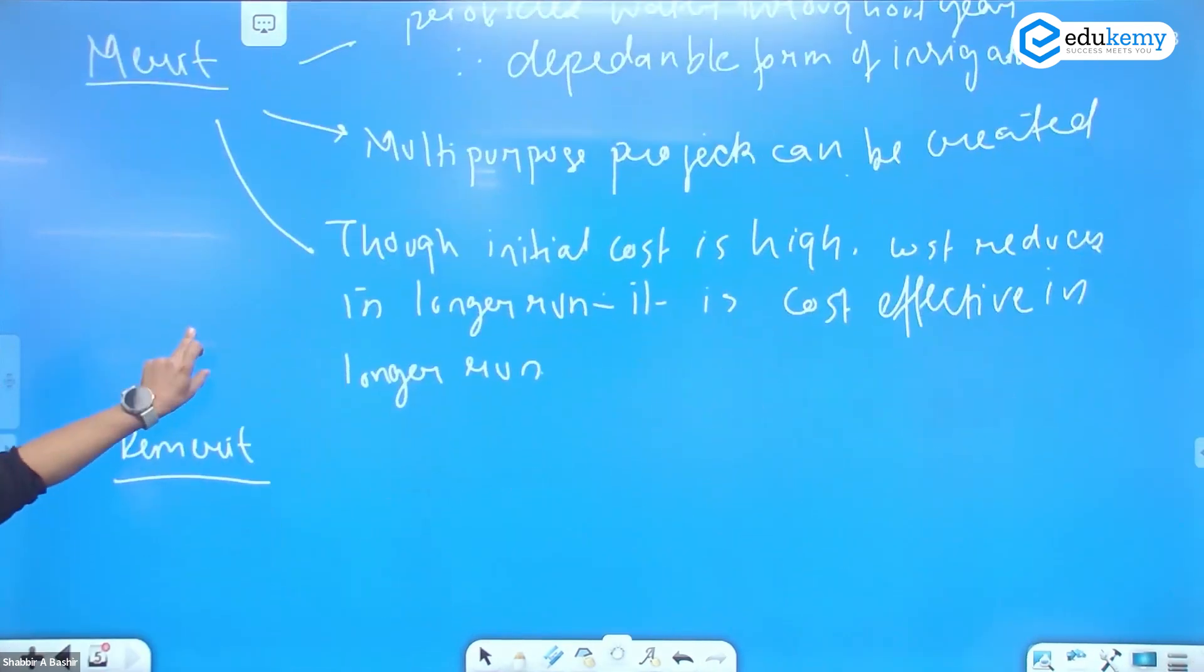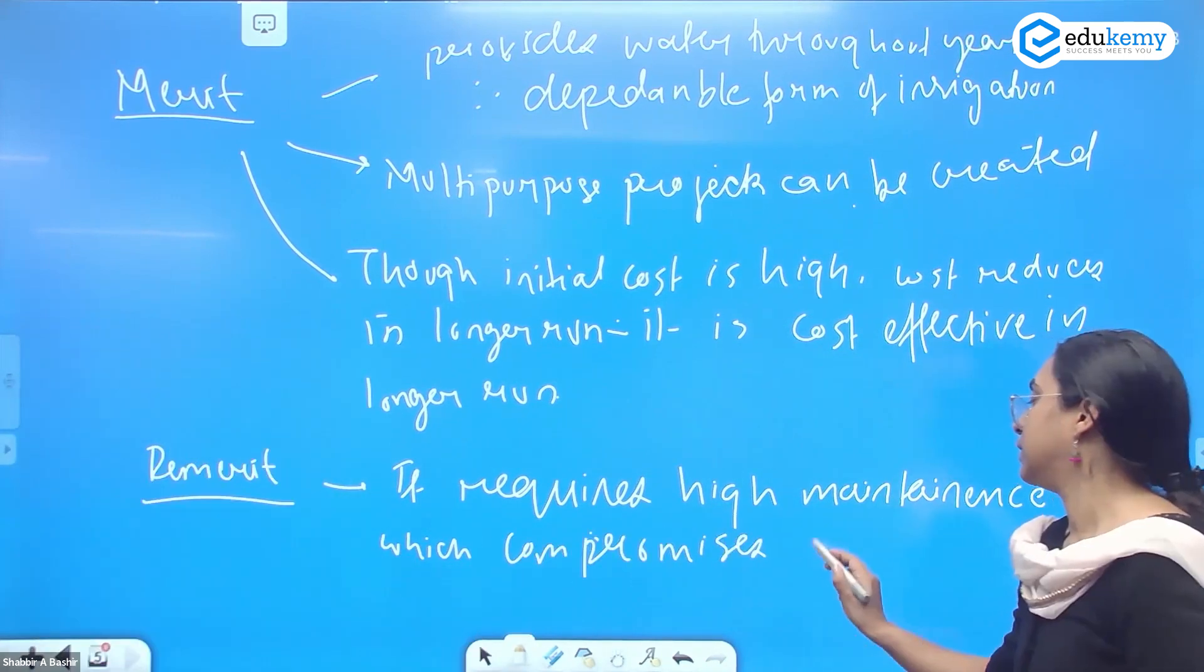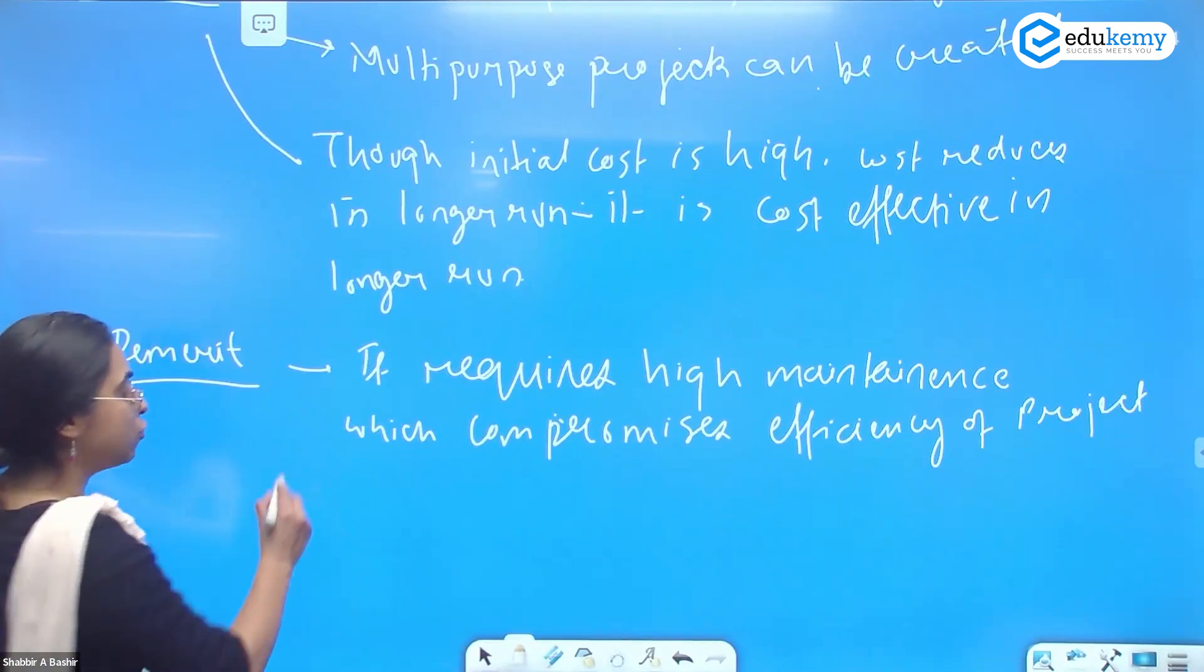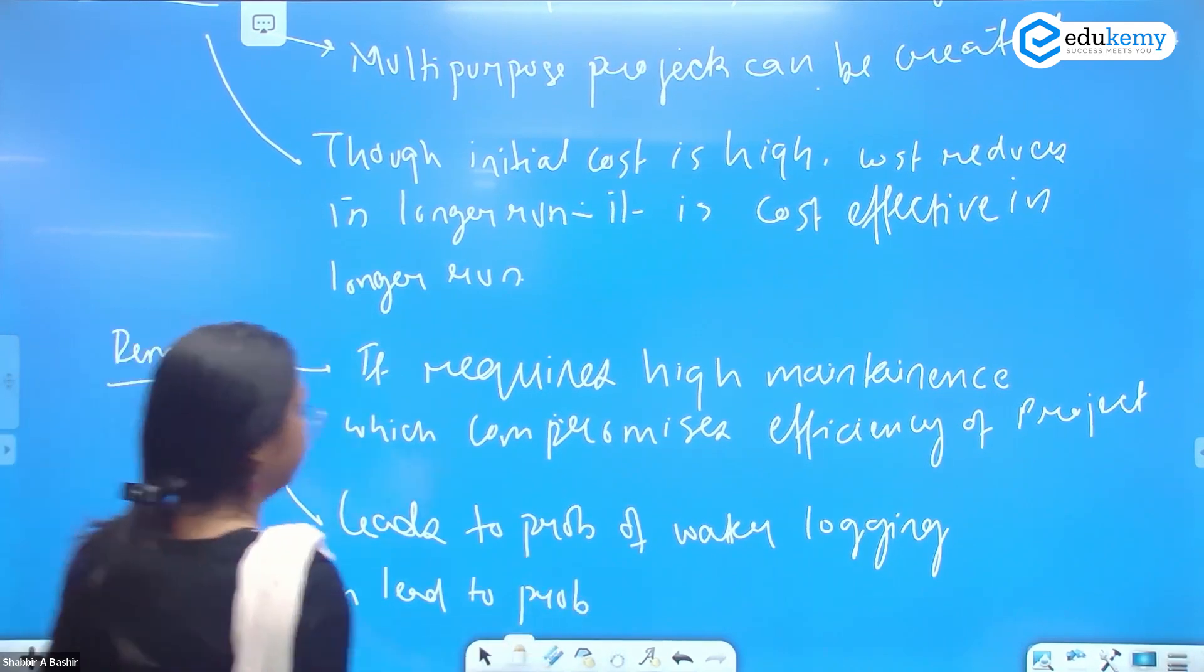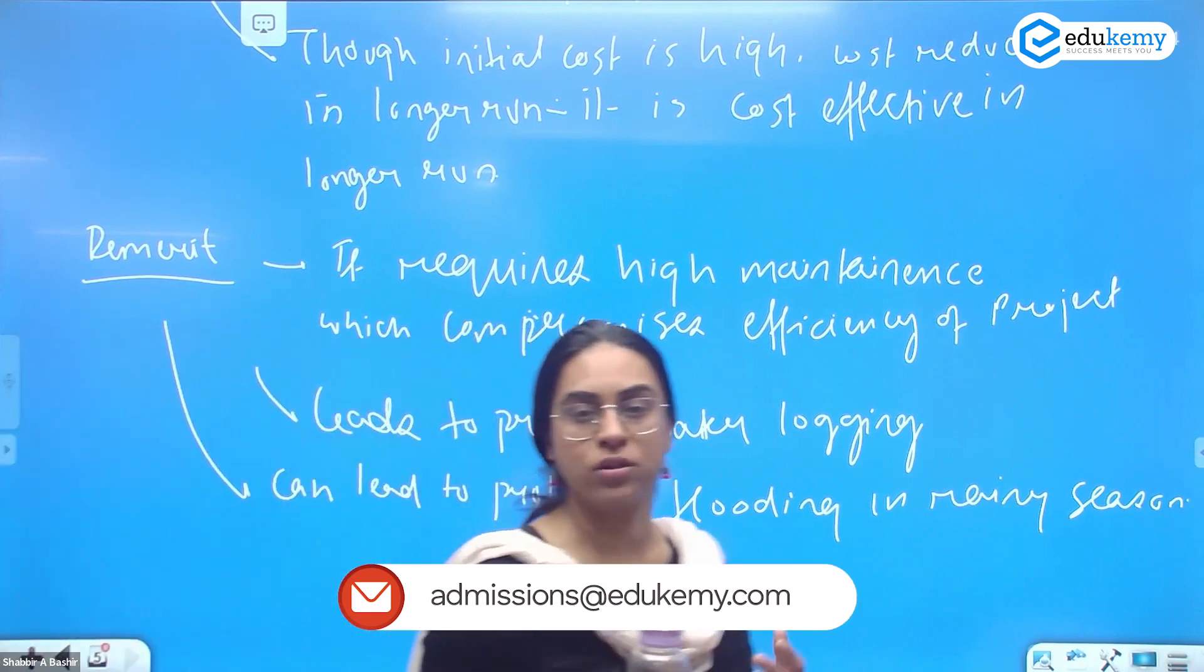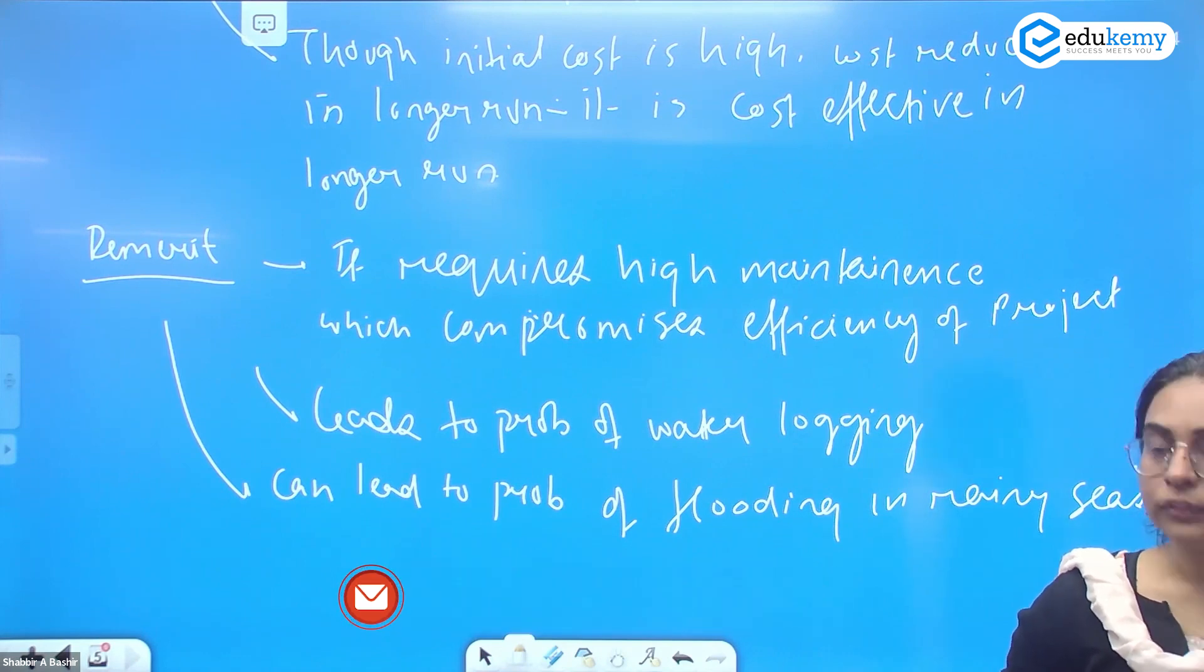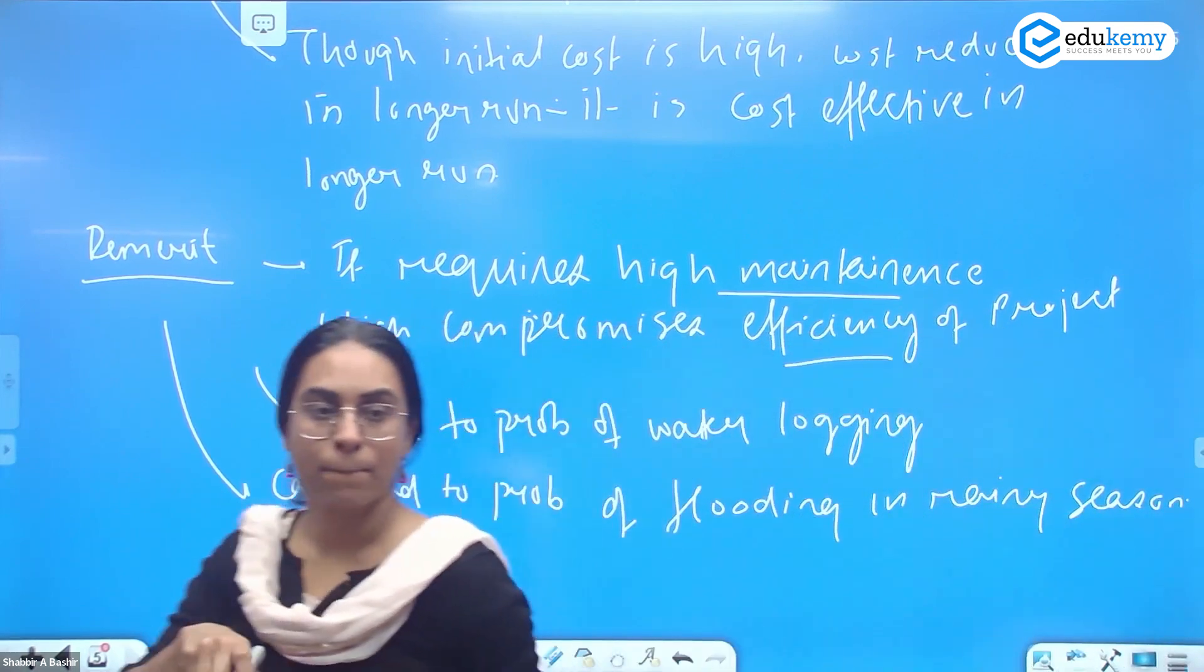Demerit: it requires high maintenance which compromises the efficiency of the project. The problem of water logging is very common with canal-based irrigation. It can lead to the problem of flooding in rainy season. Though initial cost is more, there is not much cost of pumping, so it is cost effective in the longer run.